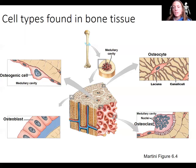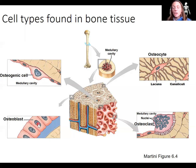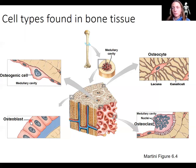Another example would be the stratum basale of the epithelial tissue of your skin, where cells are dividing constantly to regenerate skin. Stem cells are also present in adult bone marrow, giving rise to red blood cells. Osteogenic cells give rise first to osteoblasts — your immature bone cells that are producing and synthesizing collagen, that matrix. The collagen matrix then holds the calcium phosphate in crystallized form, and osteoblasts actually produce and excrete that collagen to form the matrix.